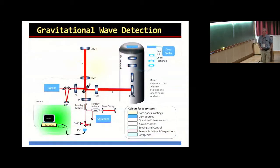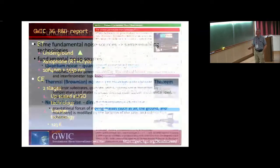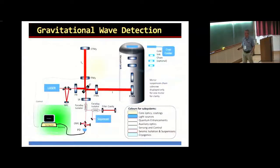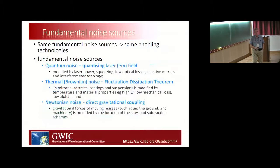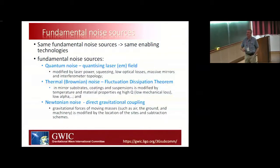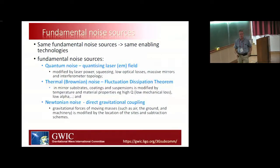This is an interferometer — this is LIGO, based on the standard LIGO-Virgo arrangements. In this color-coded plot the various subsystems and how they interact are shown, including the cooling system Rana just mentioned. These detectors — Cosmic Explorer, Einstein Telescope, and LIGO Voyager — may be different in the way they predict they'll reach different sources and limits, but the enabling technologies are fundamentally the same.